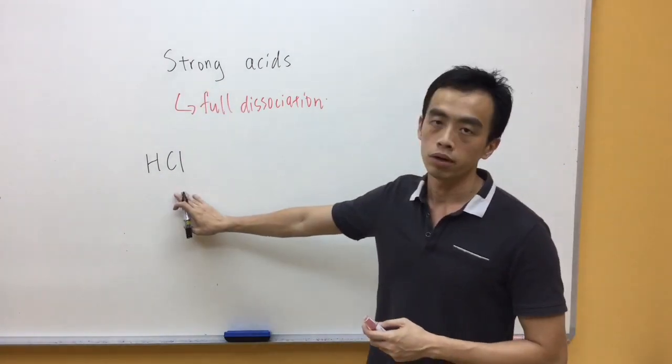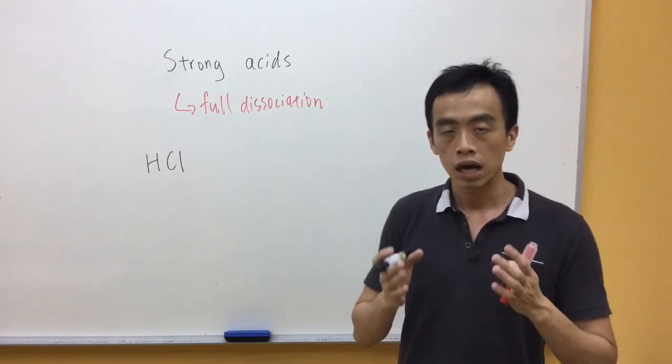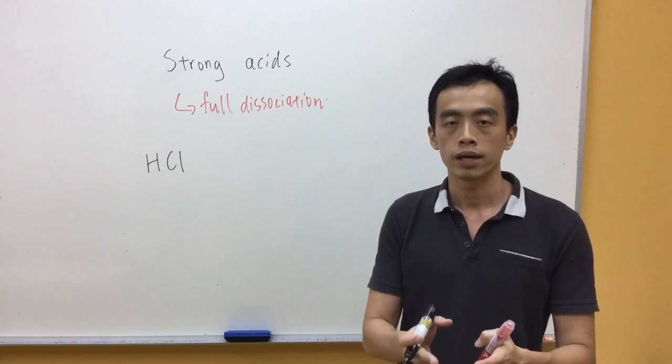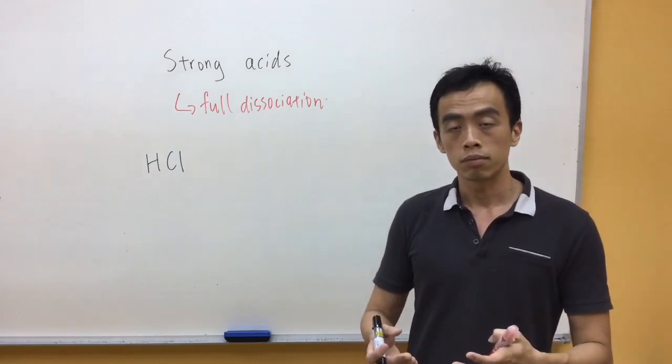Our example would be HCl, this is a strong acid. So if you dissolve this in solution, 100% of this will give me H plus and Cl minus. So it's being represented in equation form by our full arrow.